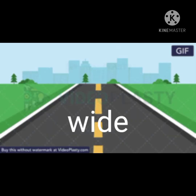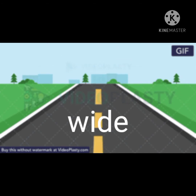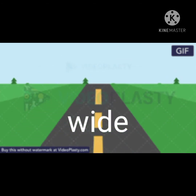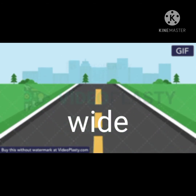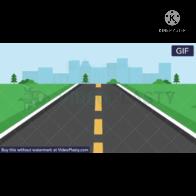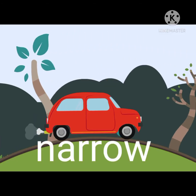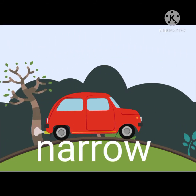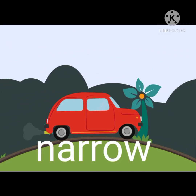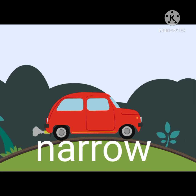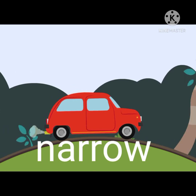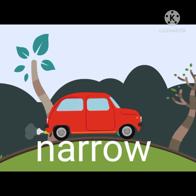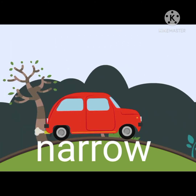A road — a white road. In Assamese, eta bohol rasta. Again, a road, but this time a narrow road — eta thak rasta. So we can describe the same object with different adjectives depending on what we see.